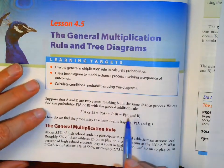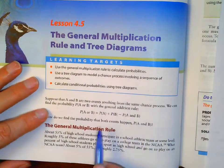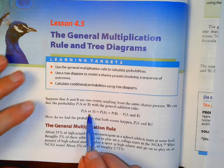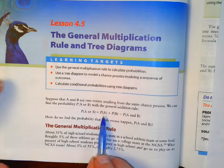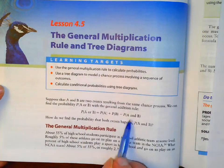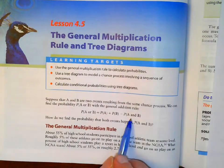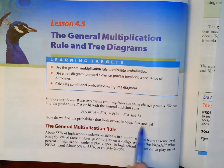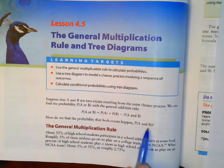We've already gone over OR statements. If something is A or B, the probability is the probability of A plus the probability of B minus the probability of A and B happening. So how do you find the A and B part?